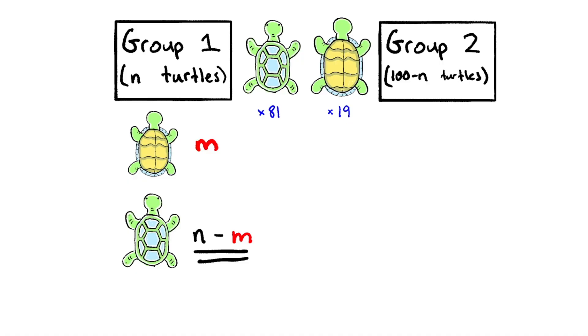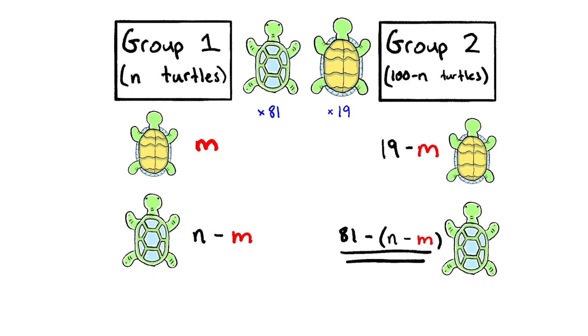We also know that all 19 of the belly up turtles will be split among the two groups. So that means in group 2, we must have 19 minus m belly up turtles. And by the same logic, we have 81 minus n minus m shell up turtles in group 2.